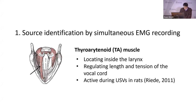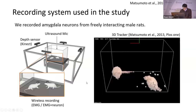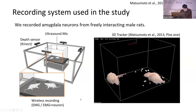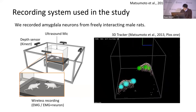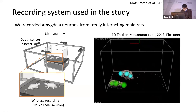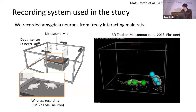I will explain the first approach using EMG. For source identification, we recorded the cricothyroid muscle, which is located inside the larynx and regulates the length and tension of vocal cords, and is active during USVs. In this study, we recorded amygdala neurons from freely interacting male rats. Neurons and EMG were recorded from a wireless transmitter on the head, and ultrasound was recorded with an ultrasonic mic above the arena. Four depth sensors surrounded the arena for 3D tracking of rats.